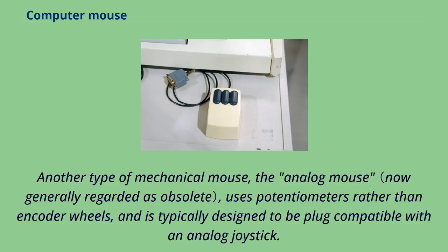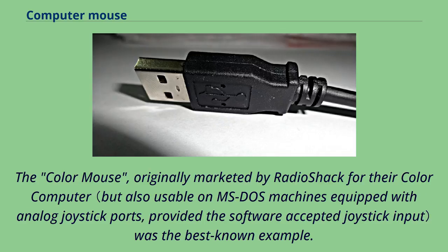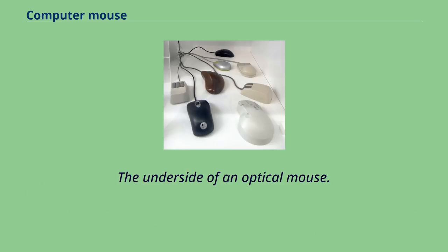Another type of mechanical mouse, the analog mouse, uses potentiometers rather than encoder wheels and is typically designed to be plug-compatible with an analog joystick. The color mouse, originally marketed by RadioShack for their Color Computer, was the best-known example.